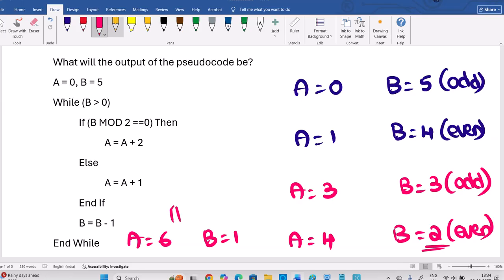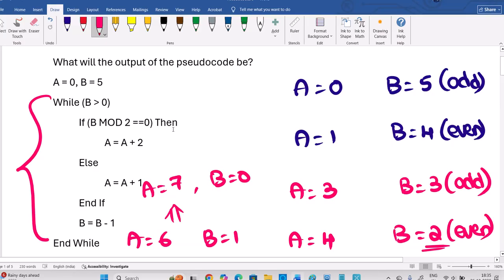Then again, A, okay, 1 is odd number. So A should be increased by 1 only. A equal to 7. B equal to 0. Now B greater than 0 failed. So the entire while loop is completed.